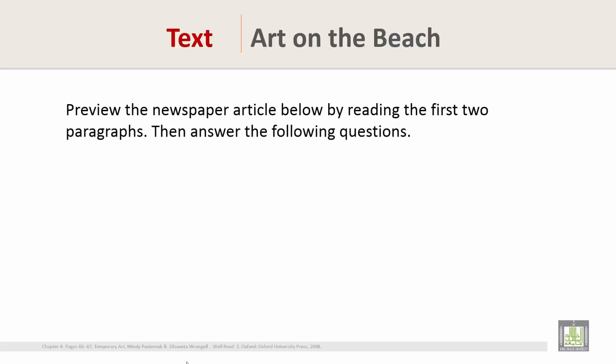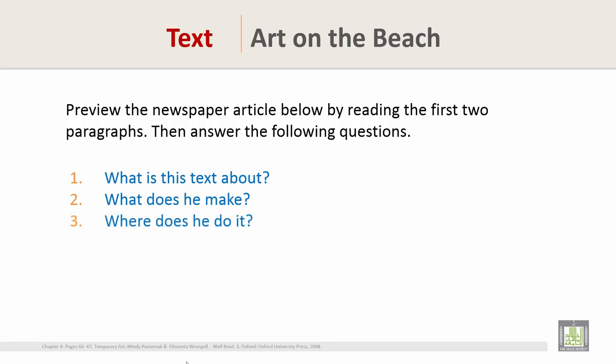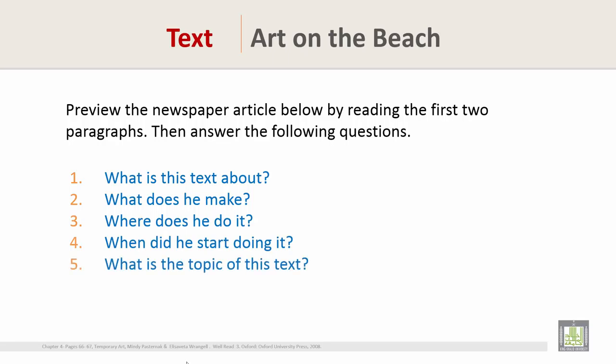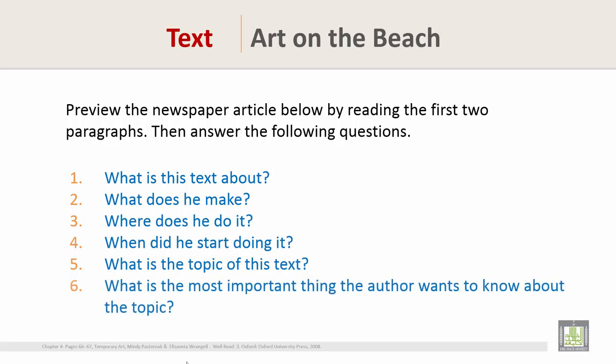Preview the newspaper article below by reading the first two paragraphs, then answer the following questions. Question 1: What is this text about? Question 2: What does he make? Question 3: Where does he do it? Question 4: When did he start doing it? Question 5: What is the topic of this text? Question 6: What is the most important thing the author wants to know about the topic?